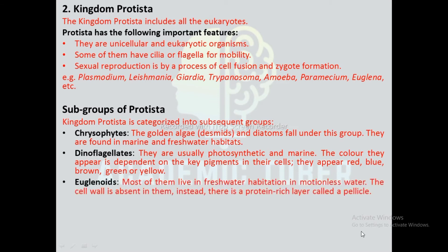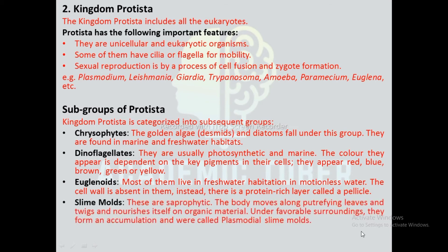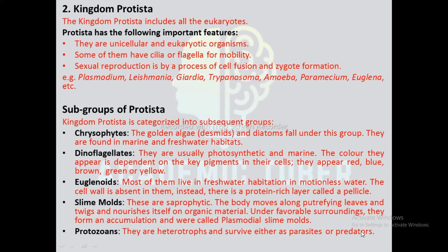Euglenoids: Most of them live in freshwater in still water. The cell wall is absent in them; instead, there is a protein-rich layer called a pellicle. Slime molds: these are saprophytic; the body moves along putrefying leaves and twigs and nourishes itself on organic material; under favorable conditions, they form an aggregation called plasmodium. Protozoans: they are heterotrophs and survive either as parasites or freely.